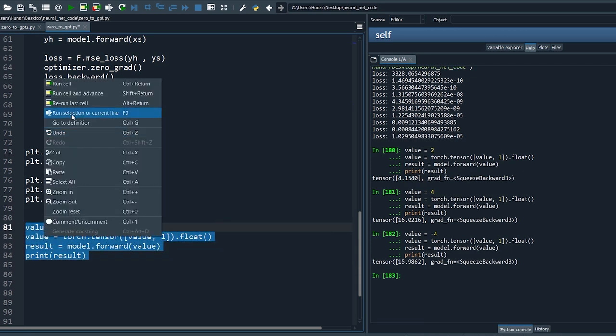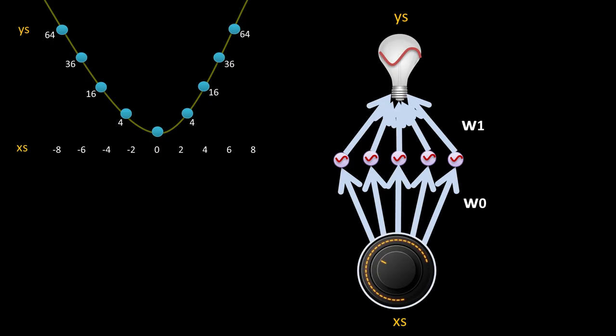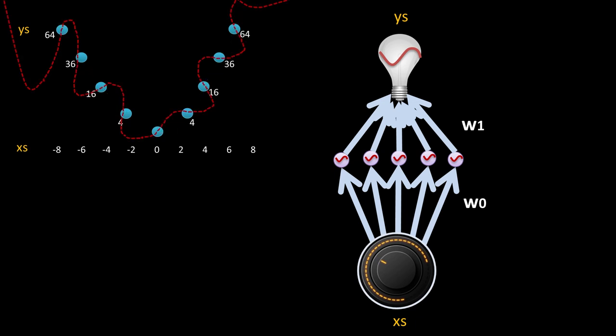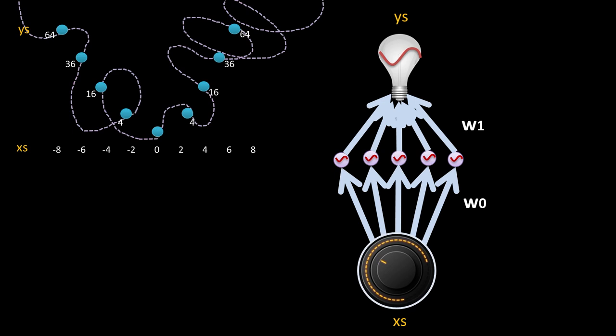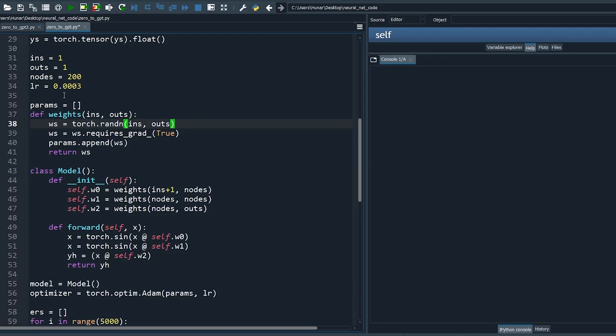Now let's try minus 5, a new value not seen by our model. The result is minus 3.7, which is not even close. Didn't we fit the training data perfectly with error rates close to zero? Well, we only fit even numbers in our small training set. These oversized networks have a lot of degrees of freedom — they can fit the training data however they want.